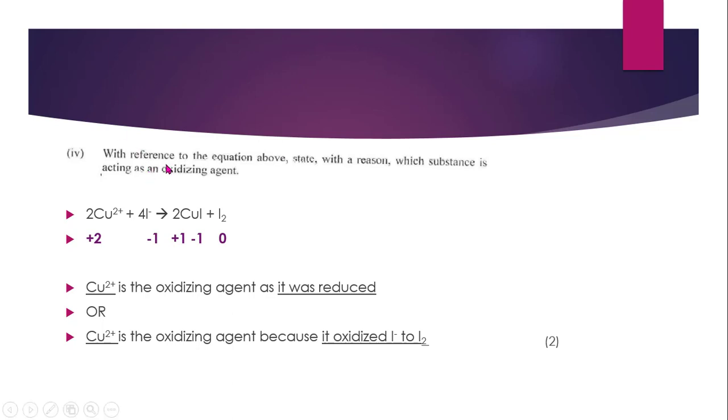Part four, with reference to the equation above, state with a reason which substance is acting as an oxidizing agent. So in part two you were asked to calculate the oxidation state of copper in copper iodide, which was worked out to be plus one. We also knew that iodide is minus one. Iodine, this is a compound in its free state, has an oxidation state of zero. And Cu2 plus has an oxidation state of plus two.